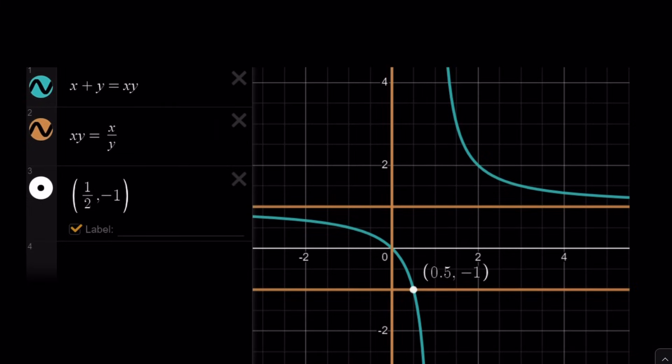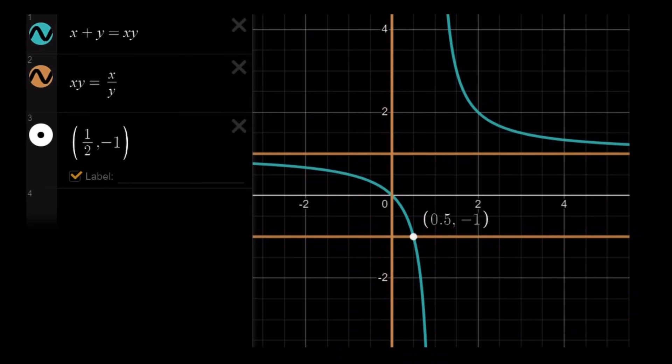Let's go ahead and take a look at the graph and we'll finish up. So the graph, this is the way I made this graph in Desmos. X plus y equals xy. Remember, that's the first two expressions. And then the second and third gives us the other one. And notice that these two graphs intersect at a single point, one half comma negative one.